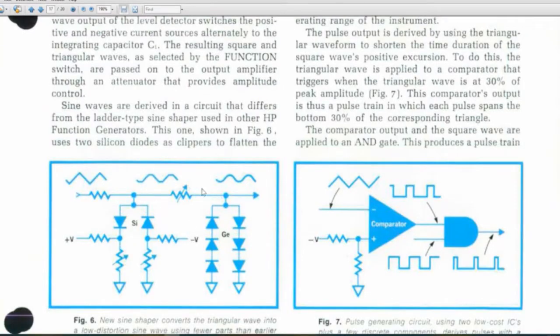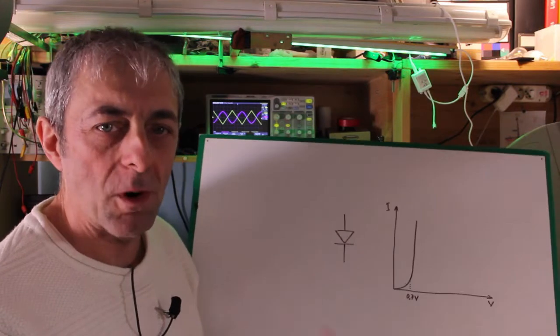That circuit is pretty simple because it is made with a chain of silicon diodes followed by a series of germanium diodes. What? How this wave shaper works?